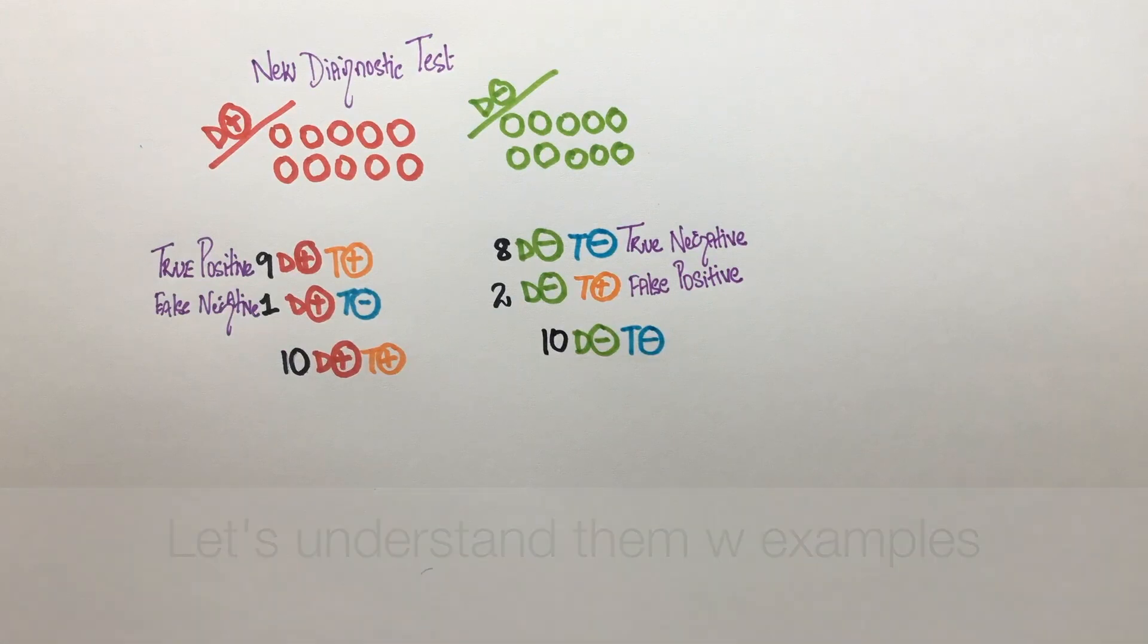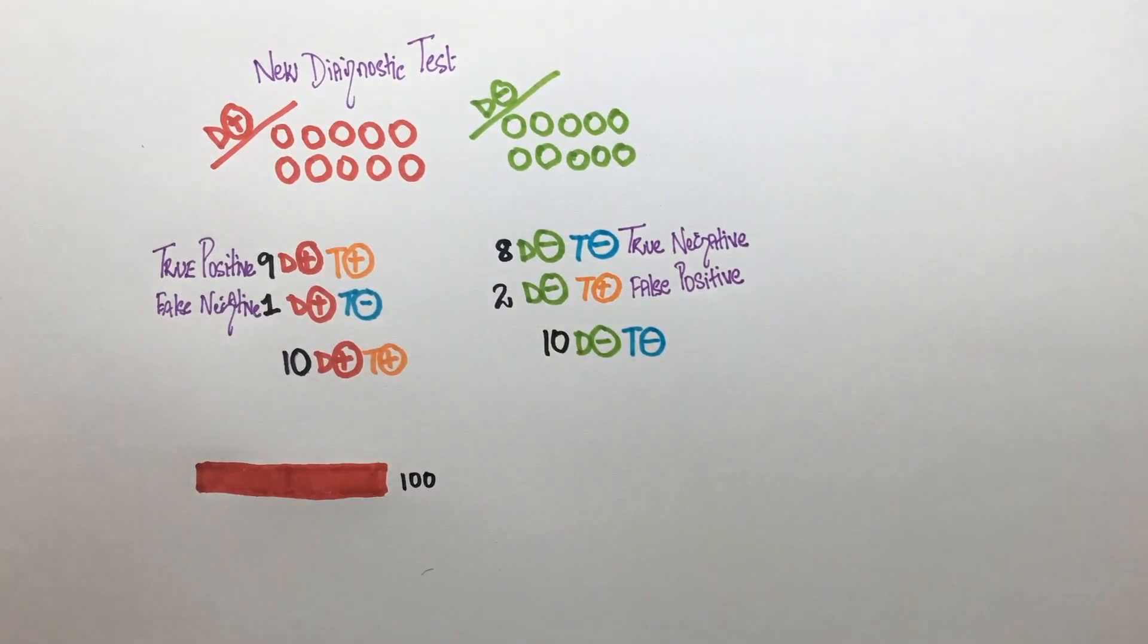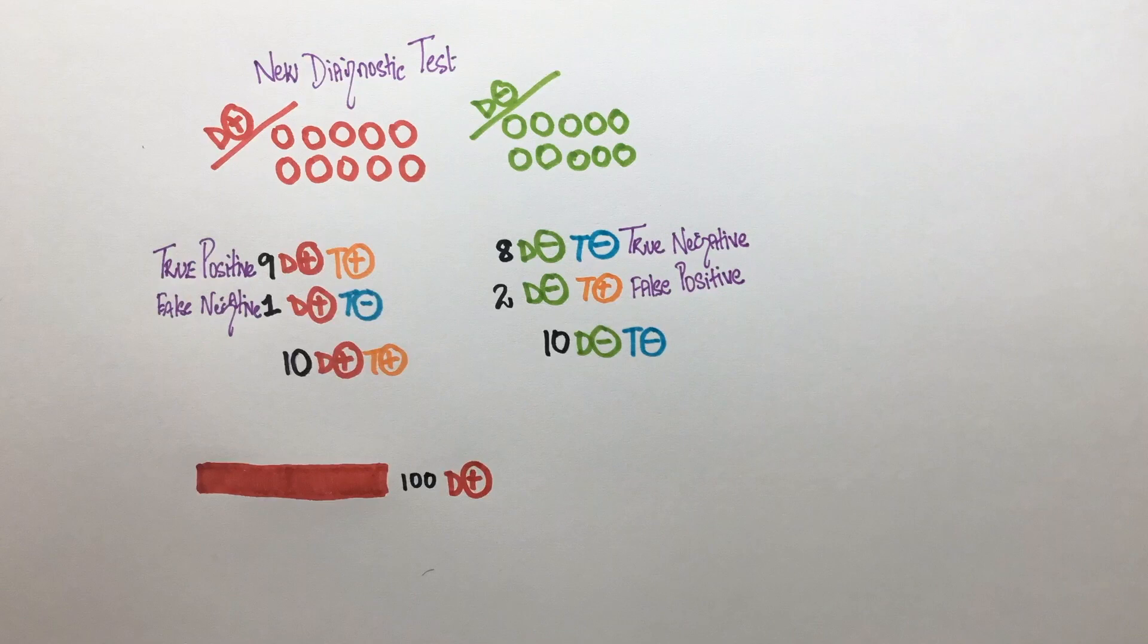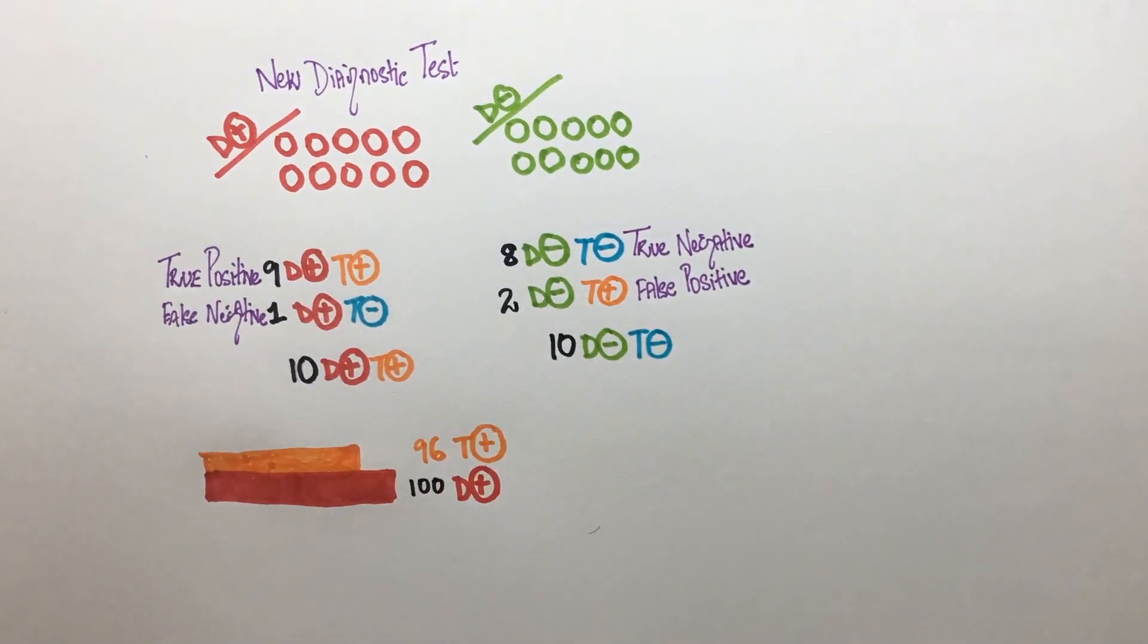When we say that a particular test is 96% sensitive, we mean that if we test 100 people who have a particular disease, 96 of them will be tested positive using that test.